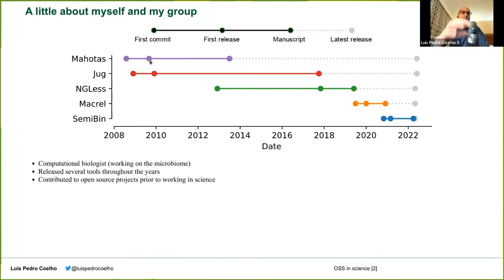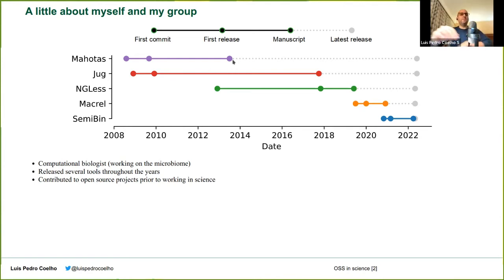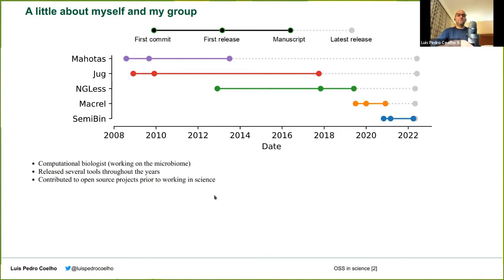One of the points I want to make is that even after a manuscript is released for a tool, work doesn't stop. When you publish a paper with scientific results, once the paper is out, that's typically it — maybe you do follow-up work, but that will be a different paper. Whereas with tools, things keep going. For example, an updated version of Python had a small incompatibility, so we had to go fix it. I was doing open source software before I was doing science — in my undergraduate as a computer scientist — and this is a bit of the ethos I brought into science.